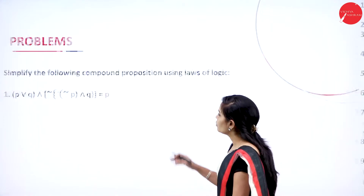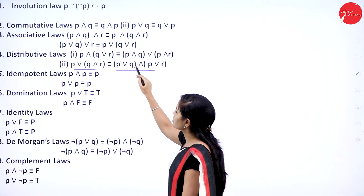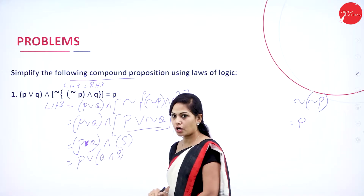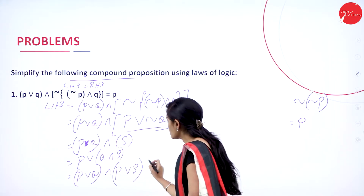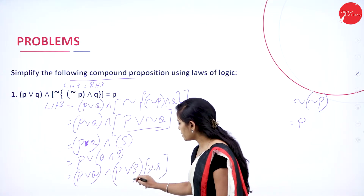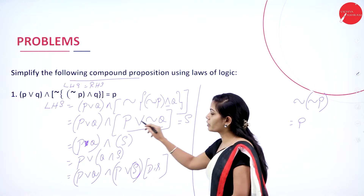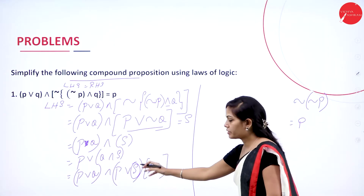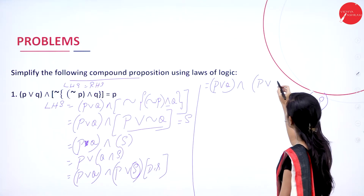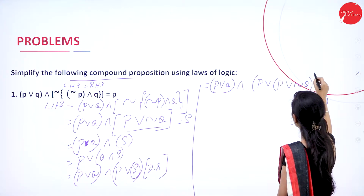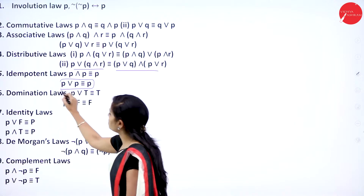Now I can apply the distributive law. The formula is in the form P ∨ (Q ∧ S), which gives (P ∨ Q) ∧ (P ∨ S). Now I will replace the S value. S equals P ∨ ¬Q, so in place of S I substitute P ∨ ¬Q. Now in the expression I have P ∨ P, and by the idempotent law, P ∨ P equals P.